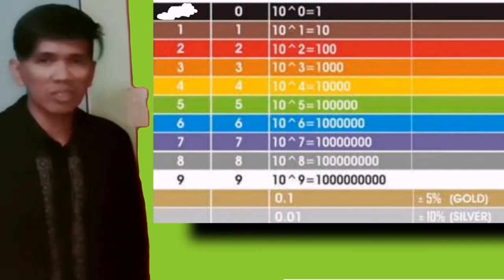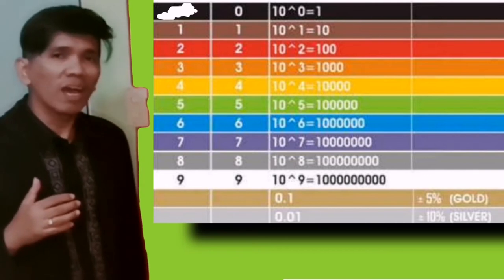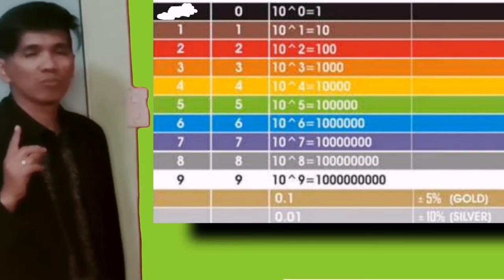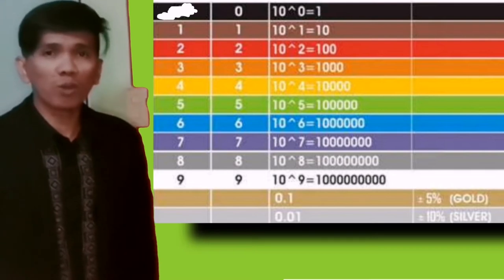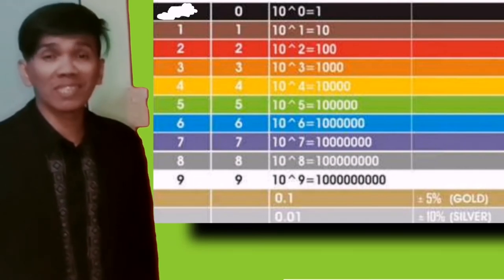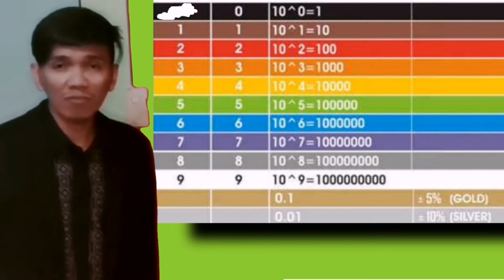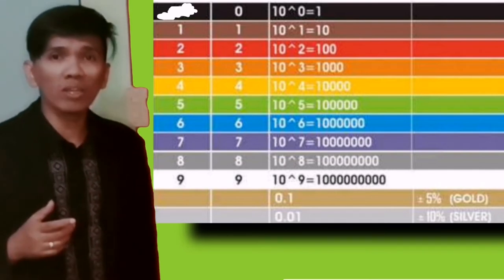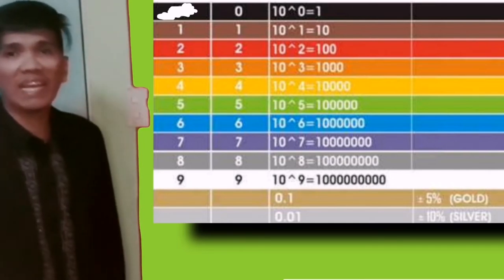The resistor color coding chart has ten different colors, and each color has an equivalent digit. The first color is black, the second is brown, the third is red, the fourth is orange, the fifth is yellow, the sixth is green, the seventh is blue, the eighth is violet, the ninth is gray, and the last is white. We also have two additional colors: gold and silver.